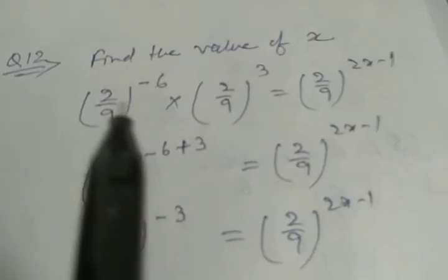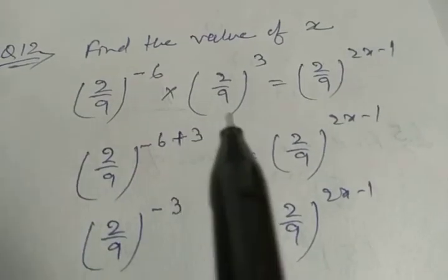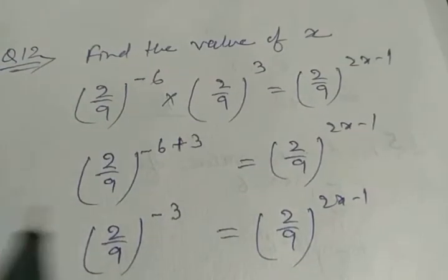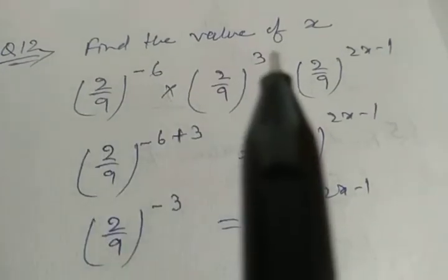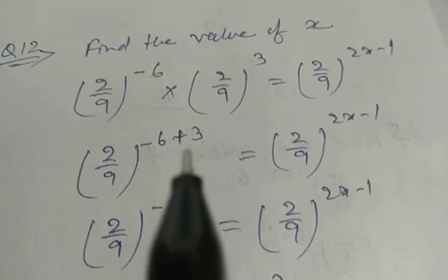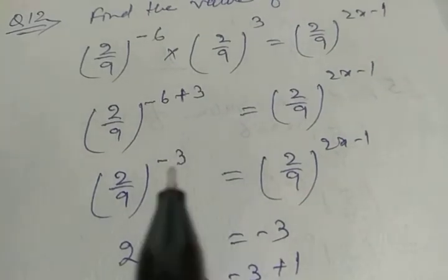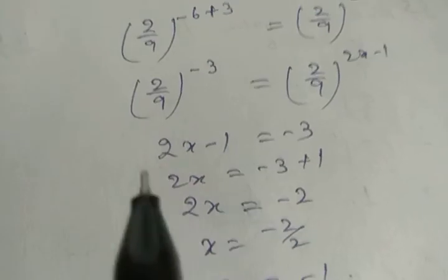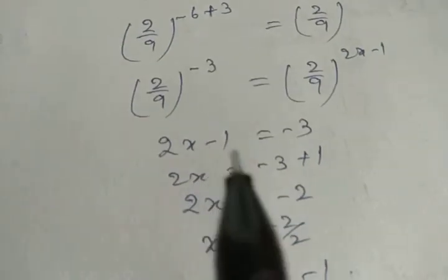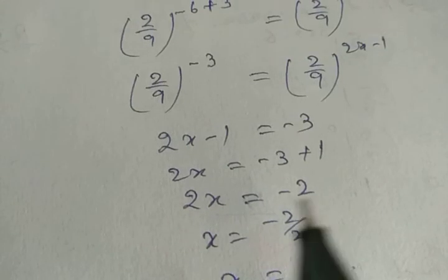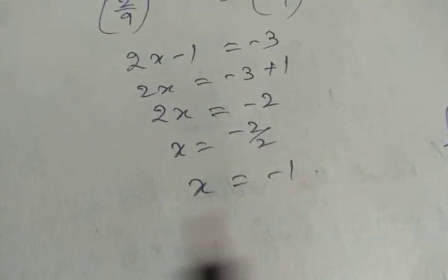Same type of problem: (2/9)⁻⁶ × (2/9)³ = (2/9)^(2x-1). Base is same everywhere, so use the multiplication rule — powers are added: minus 6 plus 3 = minus 3. So (2/9)^(-3) = (2/9)^(2x-1). Therefore 2x - 1 = -3. Transfer -1 to the other side: 2x = -2, so x = -1.